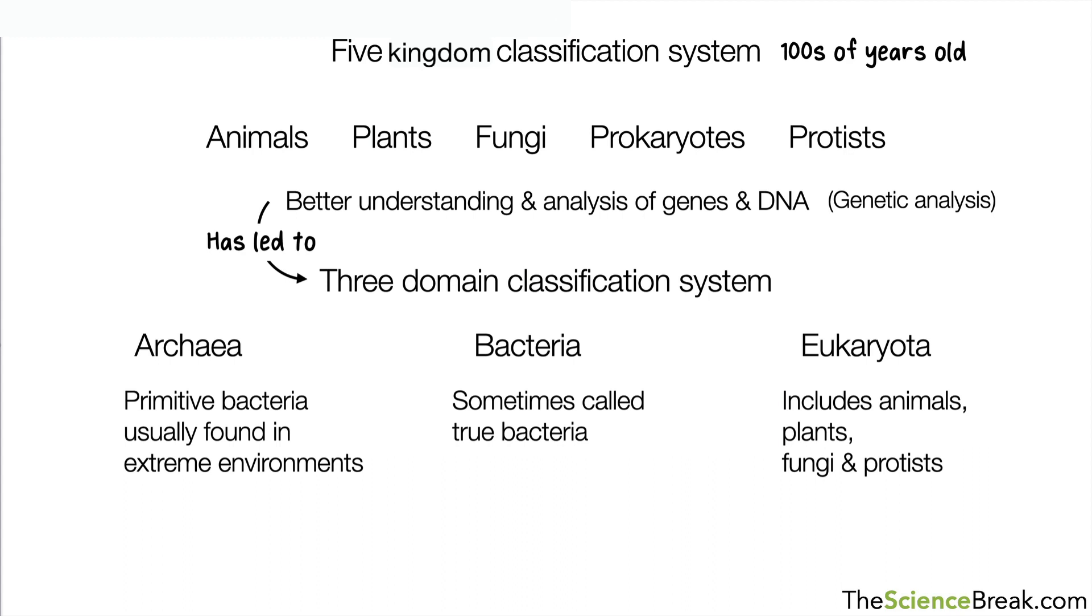So genetic analysis shows relationships between these and within these groups a bit better than the old system. So these are the three groups or the three domains in the three-domain classification system.